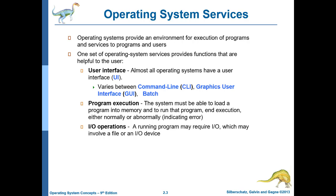Operating system services — what are they? We know that an operating system can do two things. One, it provides an environment for the execution of programs; without an operating system, you cannot execute any program. Two, it provides services to programs and users. In general, an operating system has functionalities related to the user interface, program execution, I/O operations, file system manipulation, communication, and more.